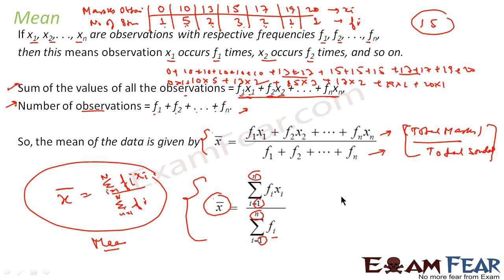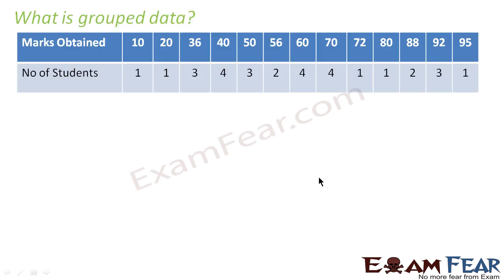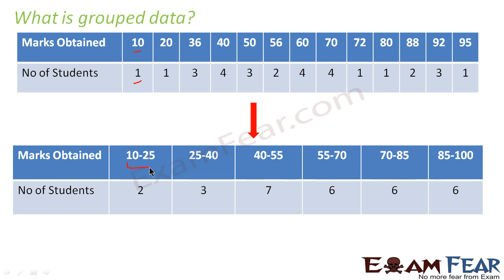Now we understand what mean is. Let's study what grouped data is. In normal (ungrouped) data, we have marks obtained and number of students directly — for example, 10 marks by 1 student, 20 by 1, 36 by 3, 40 by 4, and so on. But this is not grouped data. To group the data, we create class intervals — for example, 10 to 25 is one class with 2 students, 25 to 40 has 3 students, 45 to 55 has 7 students, 55 to 70 has 6 students, and so on.